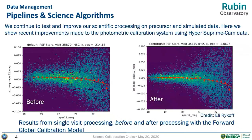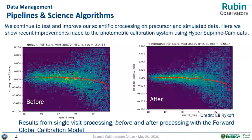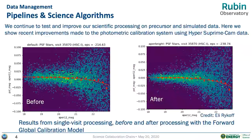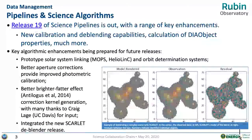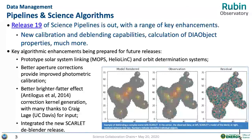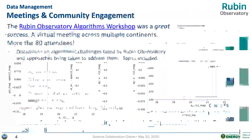Just to be clear: this shows the performance of the Scarlet de-blending algorithm specifically, not de-blending algorithms in general. It does show how Scarlet is well able to de-blend close galaxies very well.